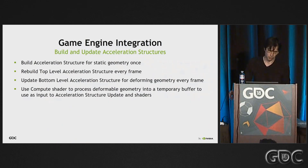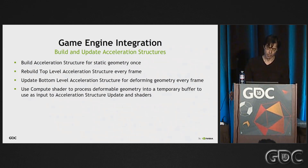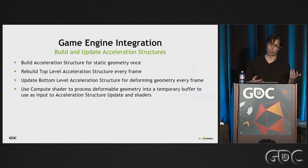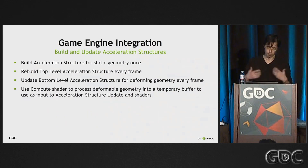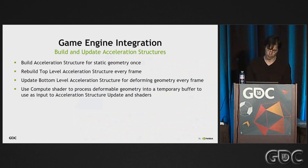For building and updating the acceleration structure, you should usually just build once for static geometry. But every frame, you will typically be rebuilding the entire top-level acceleration structure. The API supports what we call a two-level acceleration structure, where the top-level has instances pointing to bottom-level acceleration structures. Most of the bottom-level ones for static geometry are built once. But for deformable geometry, like skin meshes, you will have to update those every frame. The typical way to do that is to run a compute shader to write the results of the skinning or any deformation into a buffer that you can provide as input to the update acceleration structure command.